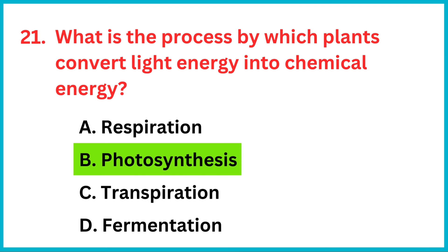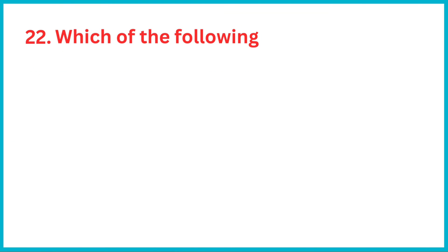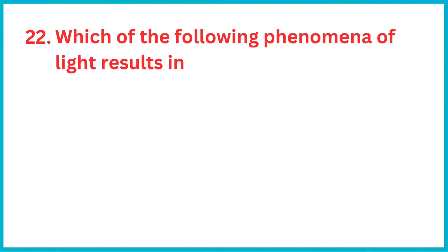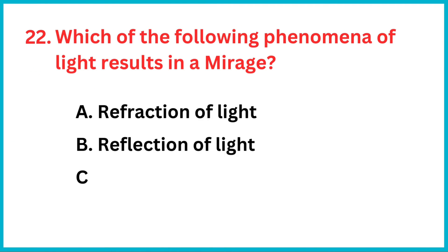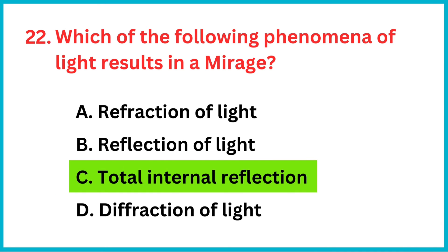What is the process by which plants convert light energy into chemical energy? The correct answer is option B: photosynthesis. Which of the following phenomena of light results in a mirage? The correct answer is option C: total internal reflection.